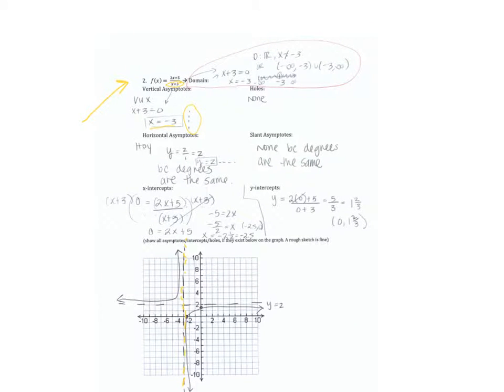Then, we know that our x values are going to be all real numbers, except x cannot be negative 3. If it helps you to make a number line, remember you try that number. If you plug in negative 3, you get error. Pick numbers on either side.